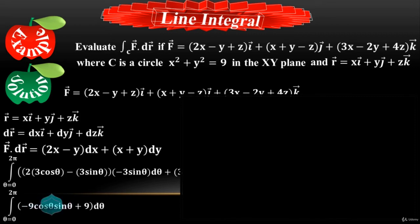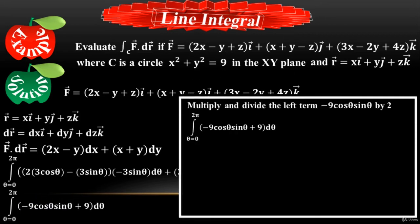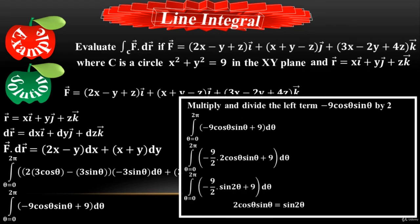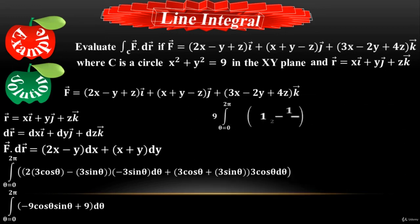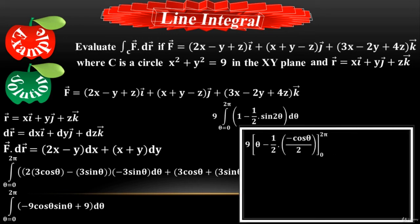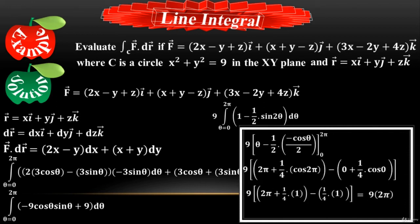To simplify further, multiply and divide −cosθ·sinθ by 2, giving −(9/2)·2cosθ·sinθ + 9 dθ. Using the double-angle formula 2cosθ·sinθ = sin2θ, replace accordingly. After simplification, integrate to get θ − (1/2)·(−cos2θ/2), then expand the limits from 0 to 2π to finally obtain 9 × 2π = 18π. This is the final line integral value of the circle in the xy-plane.